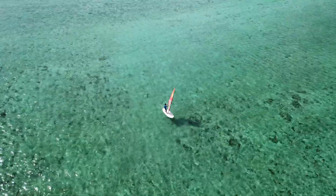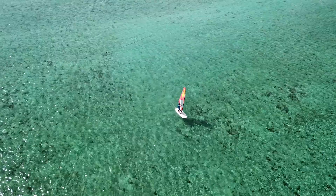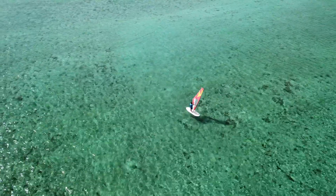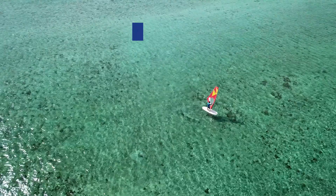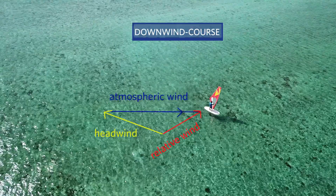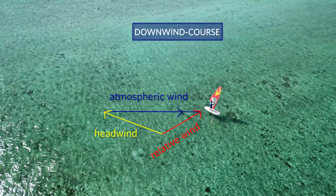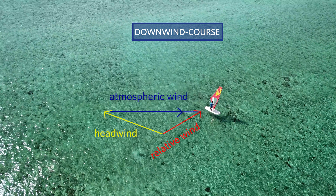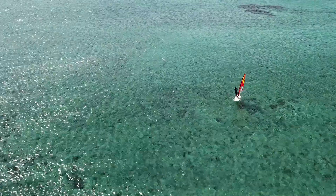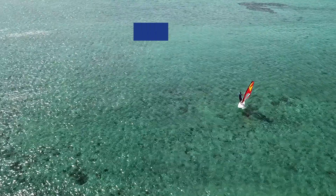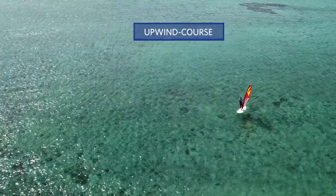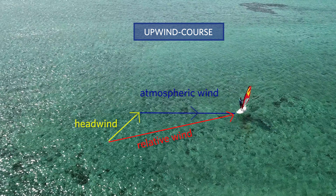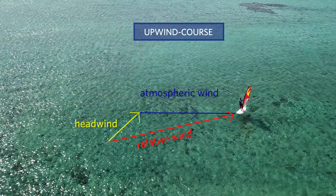Also, the course to the wind you are sailing has an influence on the strength of the relative wind. On a downwind course, atmospheric wind and headwind are blowing almost directly against one another, and therefore reduce the strength of the relative wind a lot. On an upwind course instead, atmospheric wind and headwind are more or less blowing in the same direction, and therefore reinforce the strength of the relative wind.